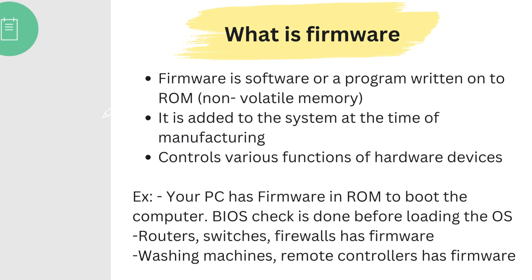The best example is firmware stored in your computer's ROM — Read Only Memory — which has instructions to boot the computer with the OS (operating system). Before loading the OS, the firmware called BIOS (Basic Input Output System) runs to ensure all devices are connected properly. We also have firmware in routers, which includes firewalls, and in home appliances such as washing machines and remote controllers.